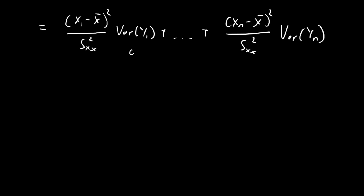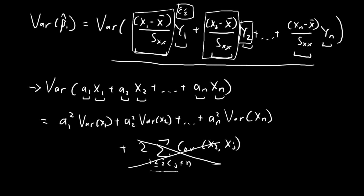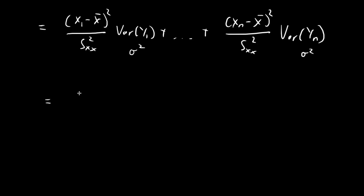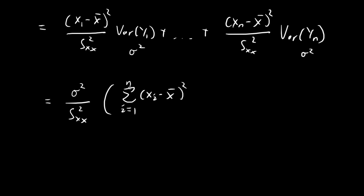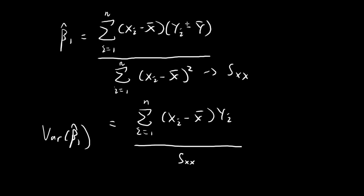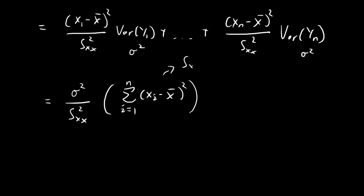The variance of all the y terms is just σ², one of the assumptions of our model — this σ² comes from the epsilon error term. So I can pull out σ², and since all terms also have Sxx² in the denominator, I can pull that out too. Inside the bracket, we have the sum of all (xi minus sample mean)² terms, which is just Sxx by definition. This Sxx cancels with one of the Sxx's in the denominator, leaving us with σ² divided by Sxx. So the variance of beta 1 hat is σ²/Sxx.